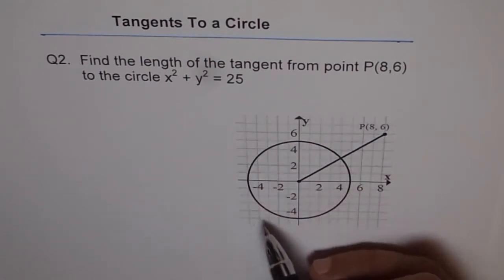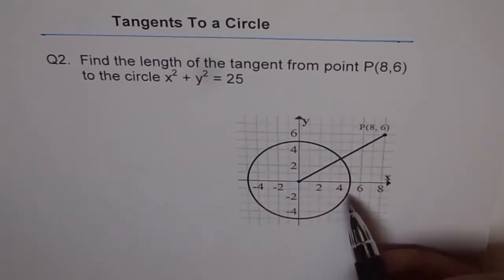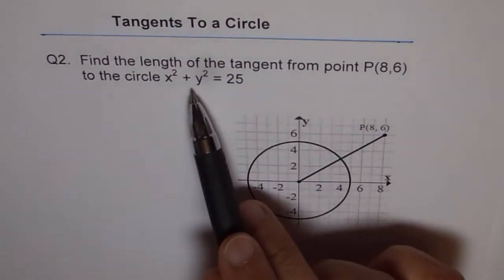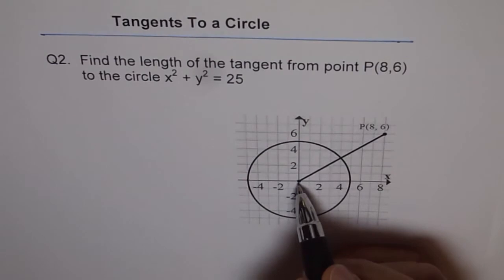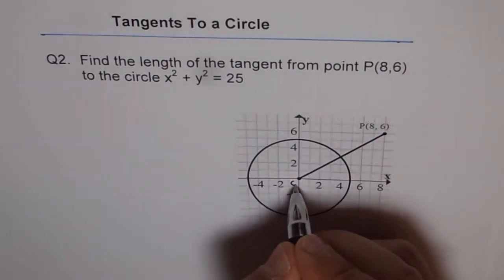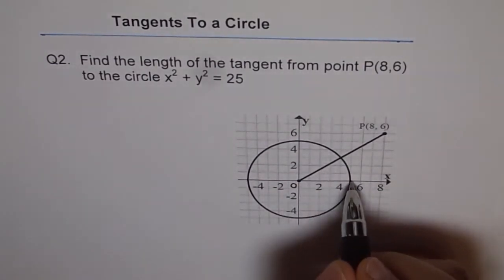And here is the circle x² + y² = 25. Circle x² + y² = 25 means a circle with center at origin, right? So let me call this as O, the origin, and radius of 5. Do you see that? R².